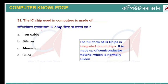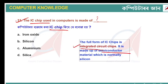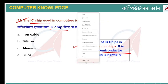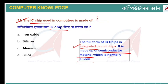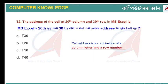The IC chip used in computers is made of what? The full form of IC chip is integrated circuit chip. This chip is made of semiconductor material, and most commonly silicon is used. So the answer is silicon.